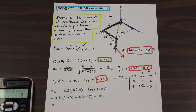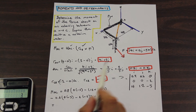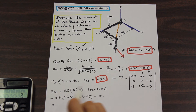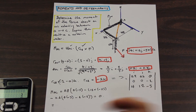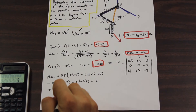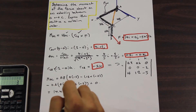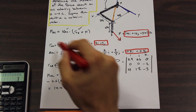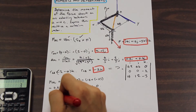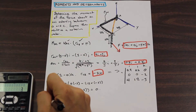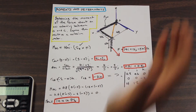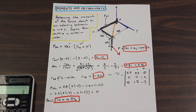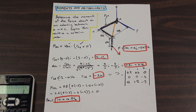Evaluating what we have: 0.8 times (0 times negative 3 minus 12 times negative 2) minus 0.6 times (0 times negative 3 minus 4 times negative 2). We get negative 24 times negative is positive, times 0.8. That gives us 14.4 pound-feet. By using the triple product we have found what the moment on axis AC equals as a result of this force, which is exactly what the question asked.